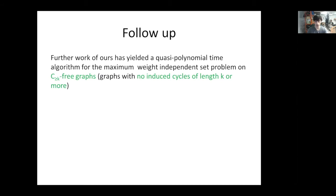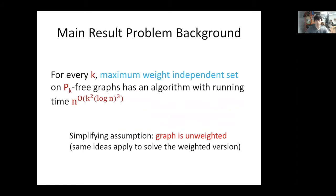Further work of ours has yielded a quasi-polynomial time algorithm for maximum weight independent set on graphs with no induced cycles of length K or more. Explicitly, for every integer K, maximum weight independent set on Pk-free graphs has an algorithm with a running time of n raised to big-O of K-squared times the third power of log n, where n is the number of vertices. For the rest of this talk, I'll make the simplifying assumption that the graph is unweighted, but the same ideas apply to the weighted version with minor modifications.